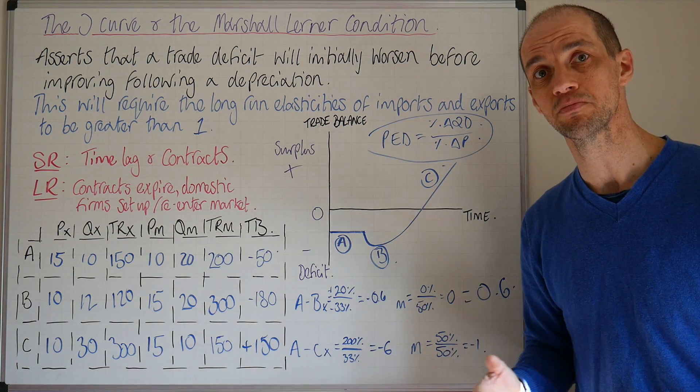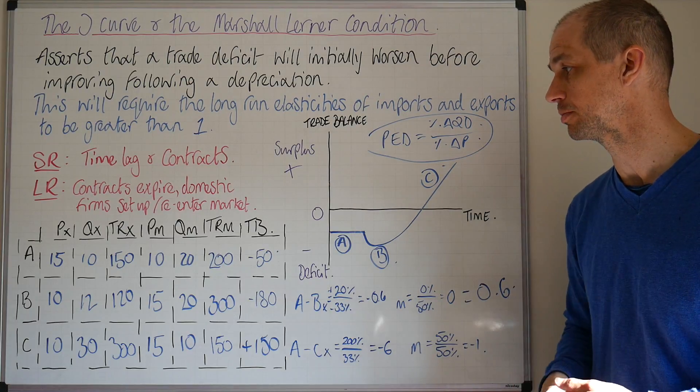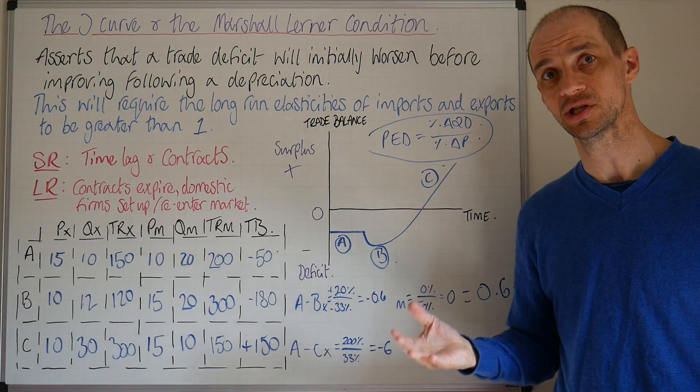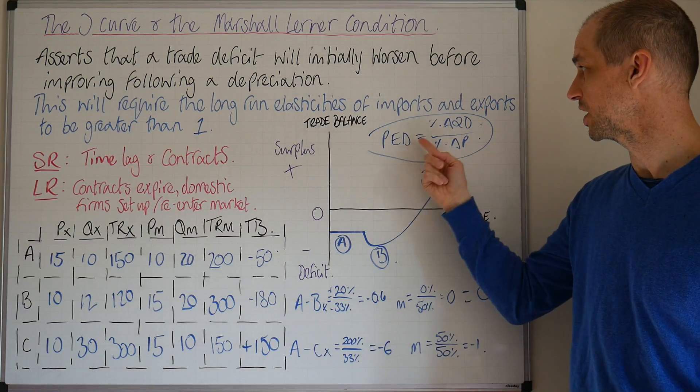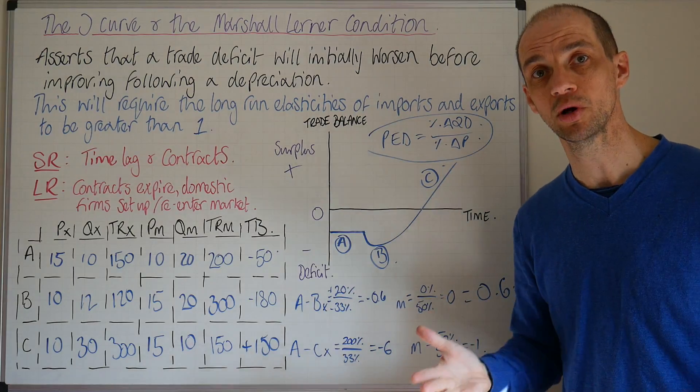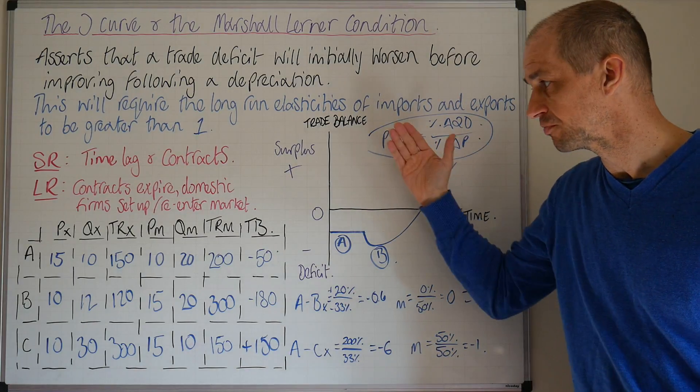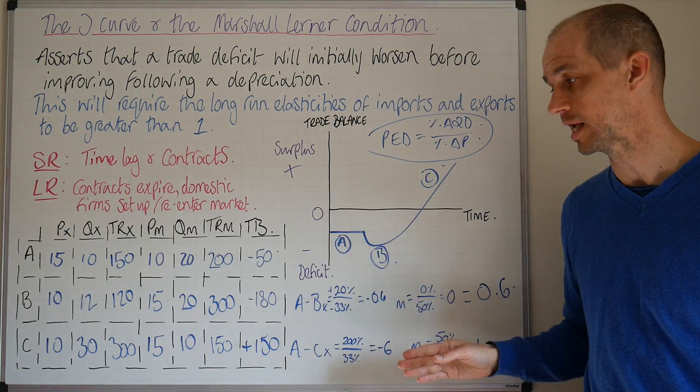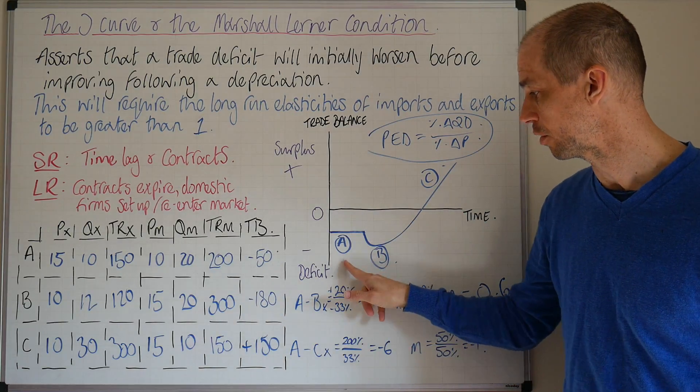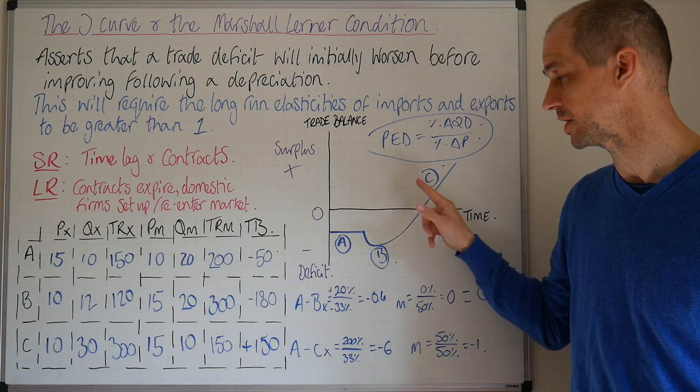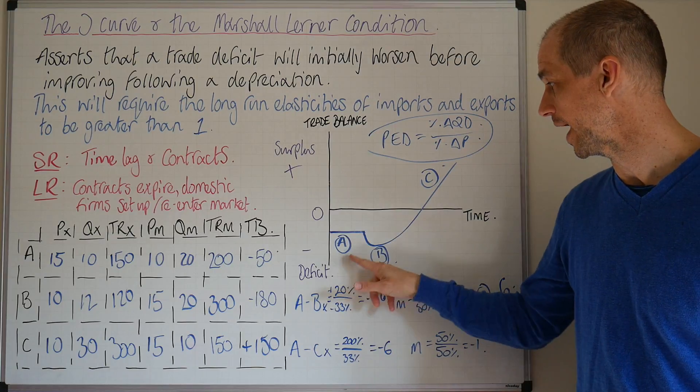If we're going to see this improvement in the trade balance position. Let's remind ourselves firstly of the price elasticity of demand formula: percentage change in quantity demanded divided by percentage change in price. We can work out two different elasticities—our short-run elasticities of demand for exports and imports from point A through to point B, and our long-run elasticities of demand from point A through to point C.